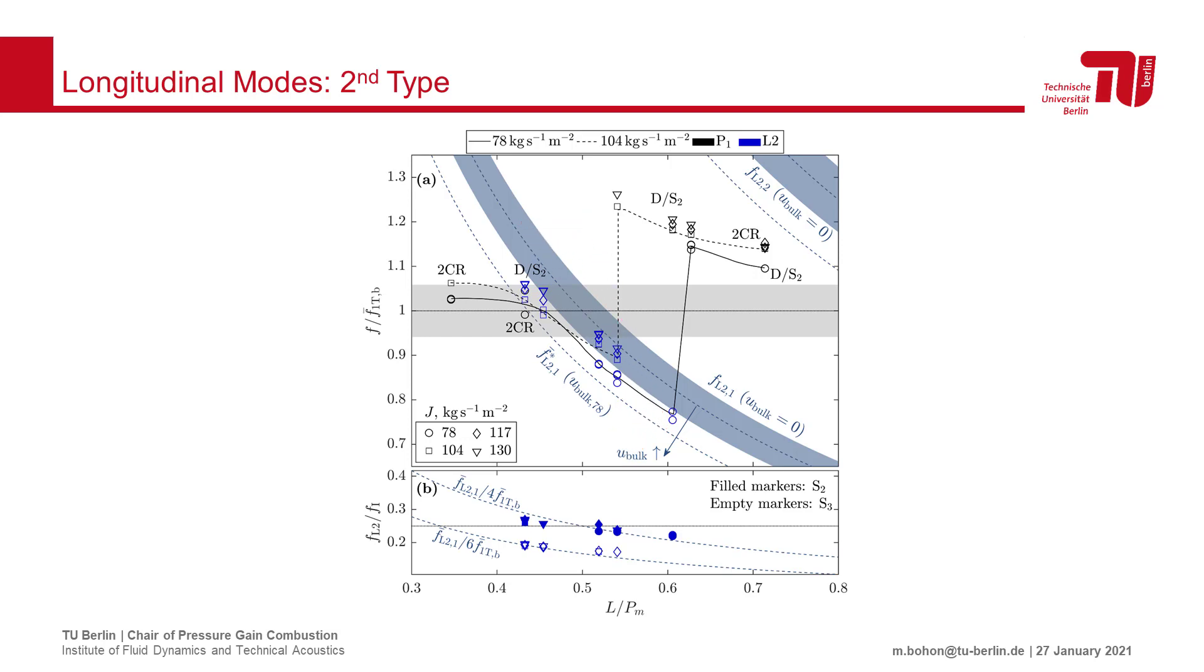This length over perimeter ratio of 0.5 is significant in that assuming a uniform speed of sound throughout the combustor, a wave could complete a lap around the annulus in the same time as a wave would propagate down the length of the combustor and back.